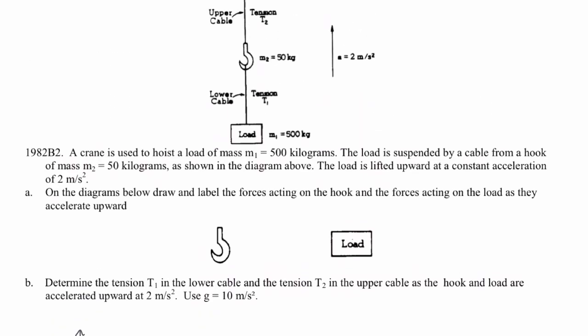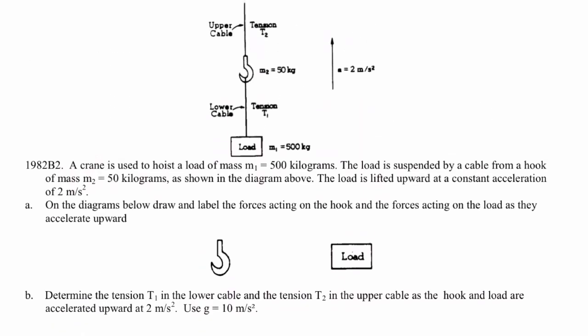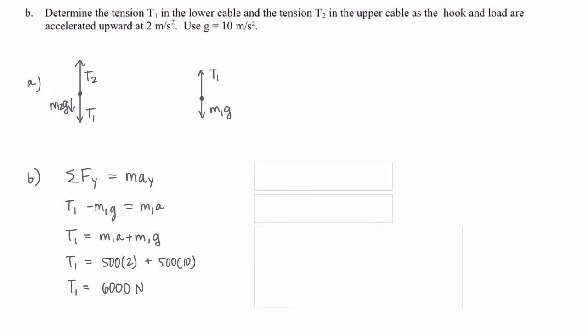So, now that we know T1, we can use that in our free body diagram, converted to a Newton's second law equation for the hook. So, again, we're going to start with Newton's second law. Sum of all forces in the y direction equals mass times acceleration in the y direction.